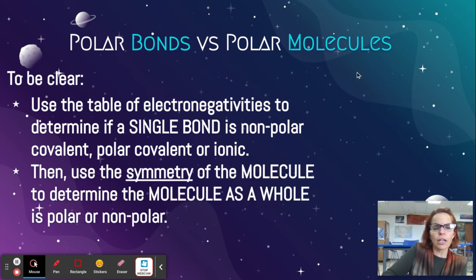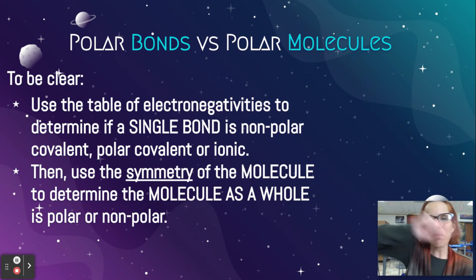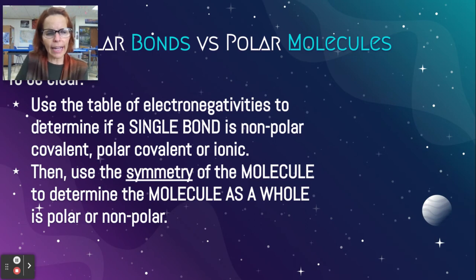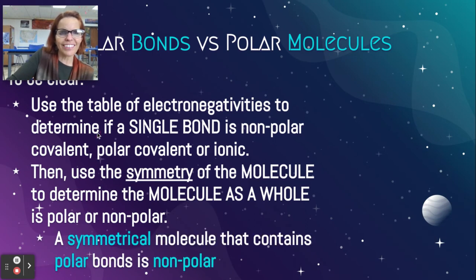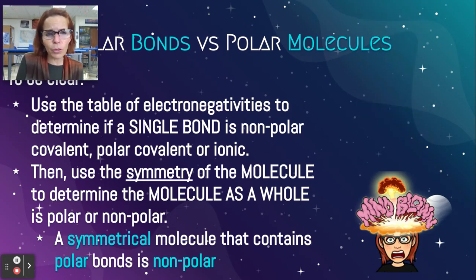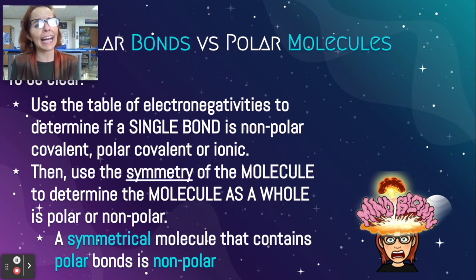You use the symmetry of the entire molecule to determine if the molecule as a whole is polar or nonpolar. Any given bond within the molecule might be polar or nonpolar, and the molecule might be different than that. A symmetrical molecule that contains polar bonds is nonpolar — because it's symmetrical. As soon as you make it asymmetrical, then it becomes polar.